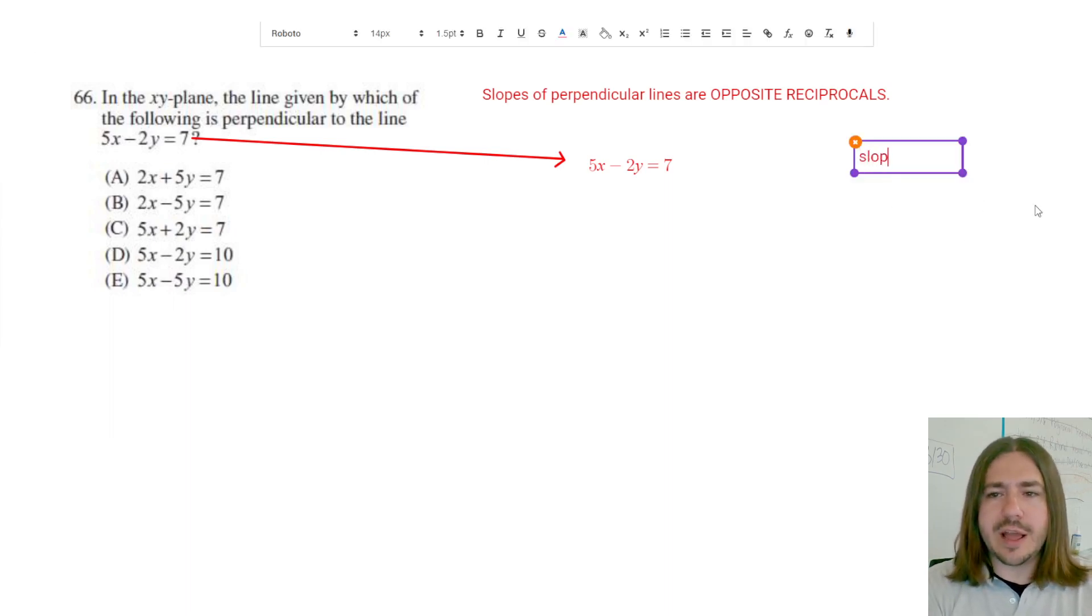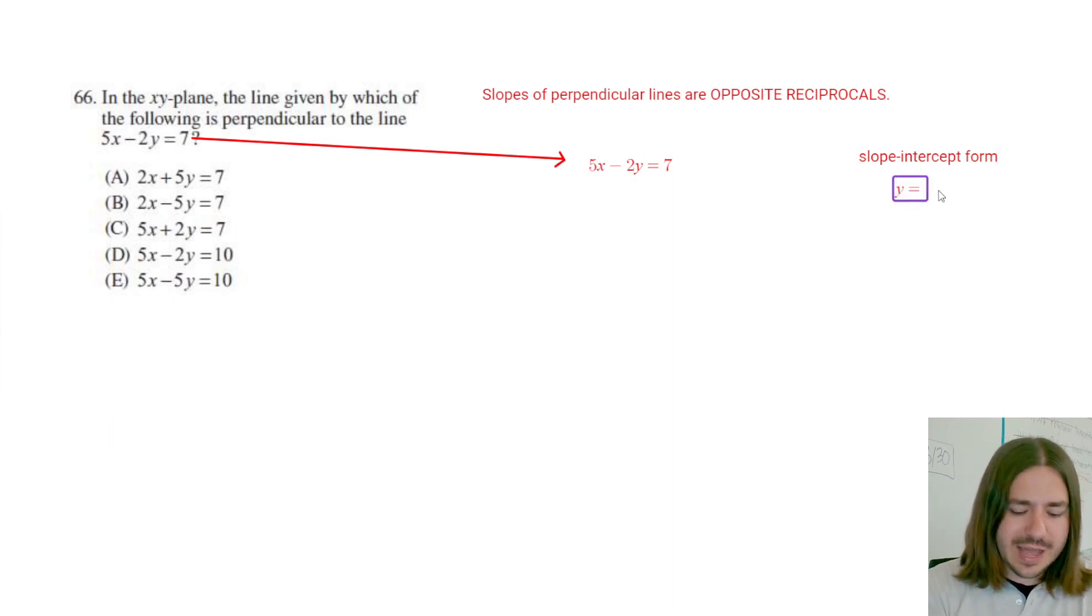So right now the equation is in standard form where we have the x and y on the same side of the equation. Slope-intercept form is this classic y equals mx plus b format. And in this, once we get it in this form, the m, this coefficient of x here, is going to be the slope.